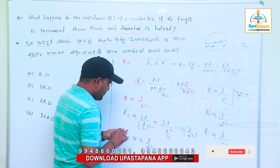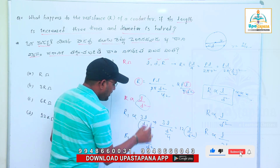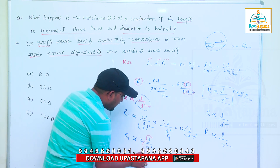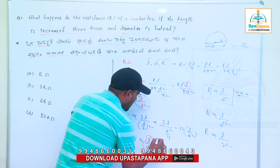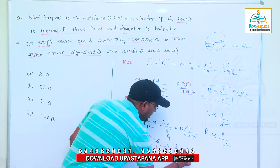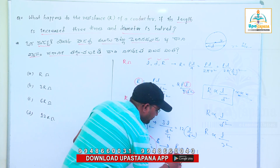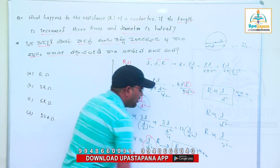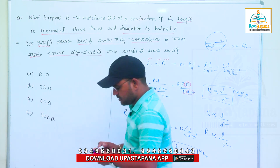Since the original R is proportional to L by D squared, and R1 is proportional to 12L by D squared, this means R1 equals 12 times R. Therefore, the value is R1 equal to 12R, and the answer is option D.